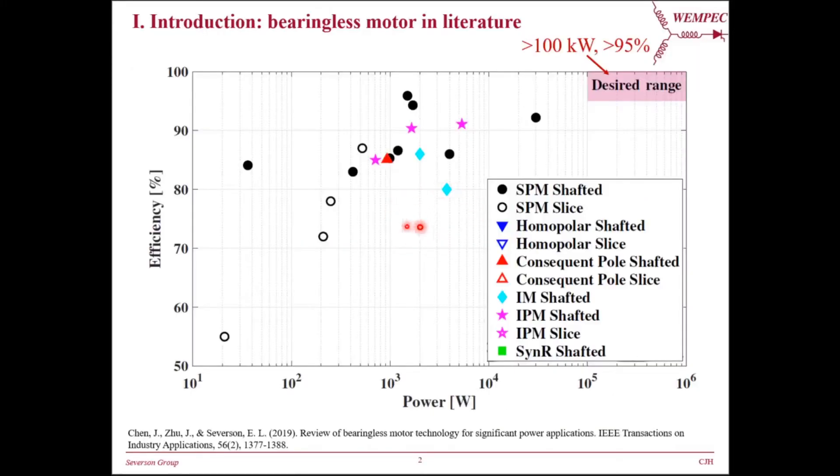This figure shows the bearingless motor prototypes reported in the literature with their measured power and measured efficiencies. As we can see, current prototypes haven't reached the desired range of over 100 kW and over 95% efficiency. We believe that reaching the desired range indicates the potential of the bearingless motors to be able to really make an impact on the industrial applications of significant power.